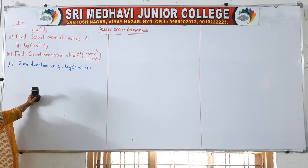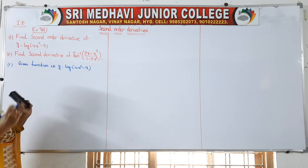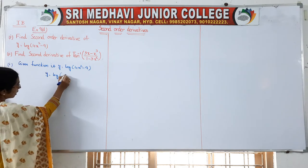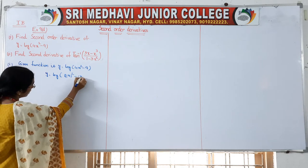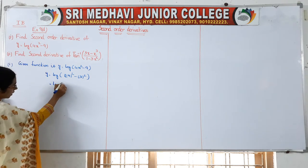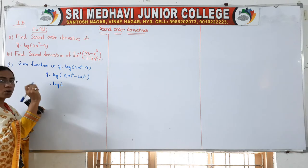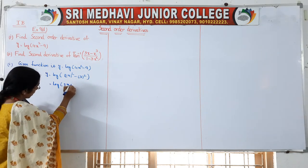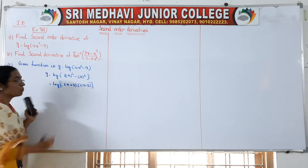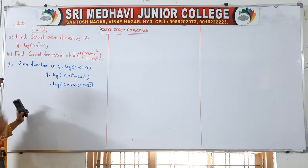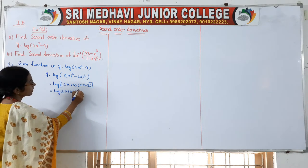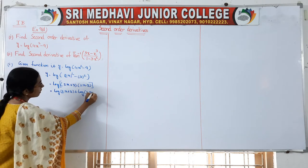We have to differentiate this. Here log of some complex form is there, so we will make it simple. We can write y = log((2x)² - 3²), which is of the form a² - b², so it becomes log((2x + 3)(2x - 3)). Using the log property log(m·n) = log m + log n, we get y = log(2x + 3) + log(2x - 3).